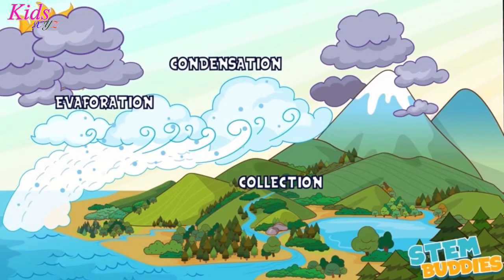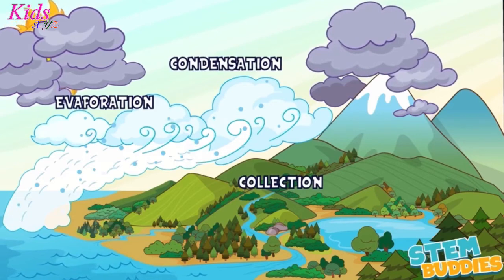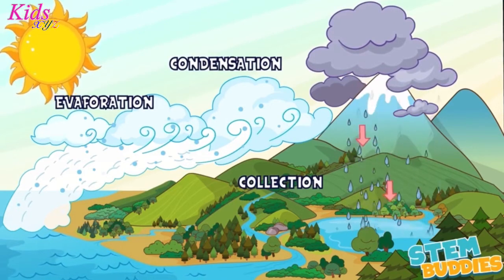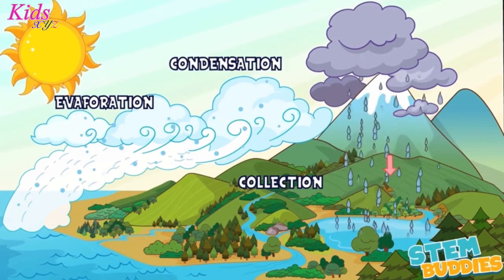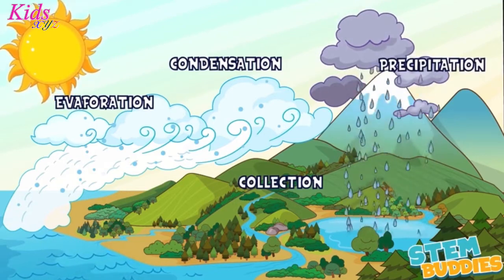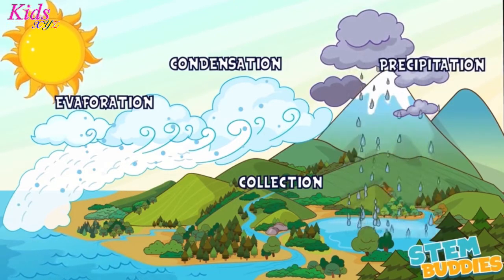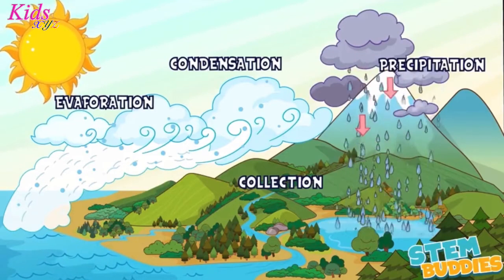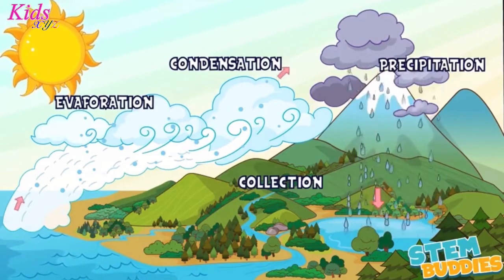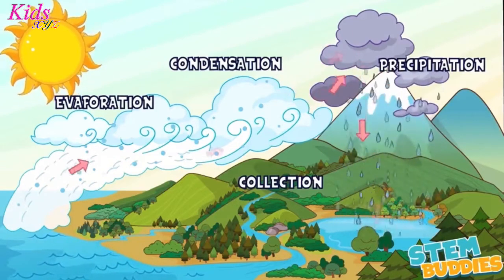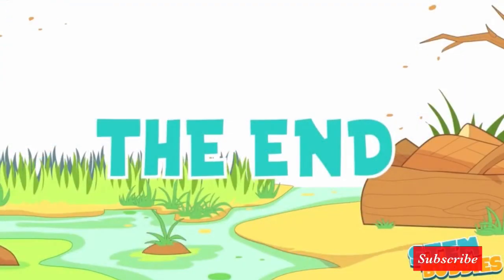When the clouds become full of condensed water, the droplets get so big and heavy that they fall to the ground in the form of rain. This is the final step and is called precipitation, which we know as rain. When the water reaches the ground, it begins to collect in puddles, ponds, marshes, or oceans, and the water cycle begins again.